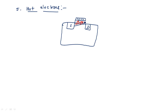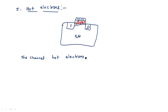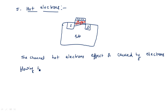When electrons enter into the oxide layer, the problem is that oxide is normally an insulator. But because of these hot electrons, the insulator comes into conduction. Then there is no insulation between the polysilicon gate and the substrate. The gate action will not work and the transistor will not work properly. This is the result of hot electrons. The channel hot electrons effect is caused by electrons flowing in the channel for large VDS. All these problems occur when we have a high VDS voltage.